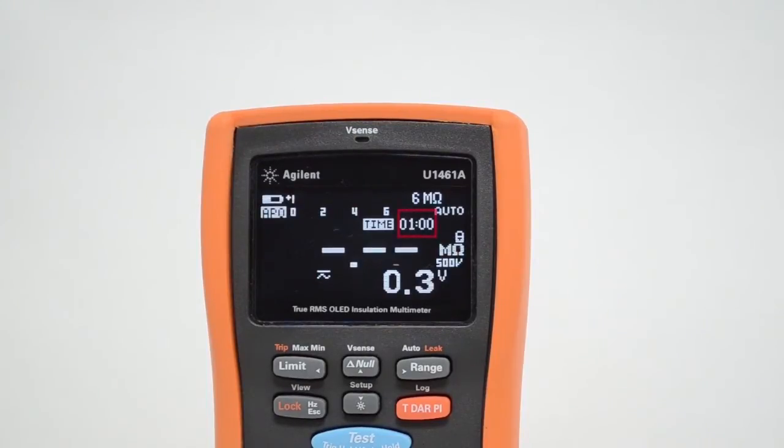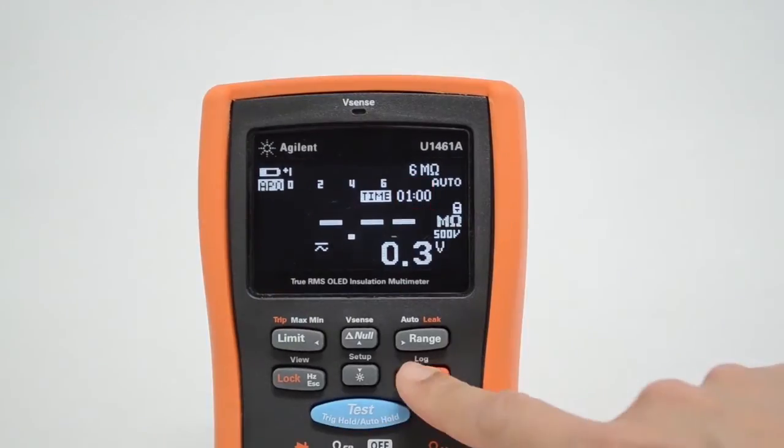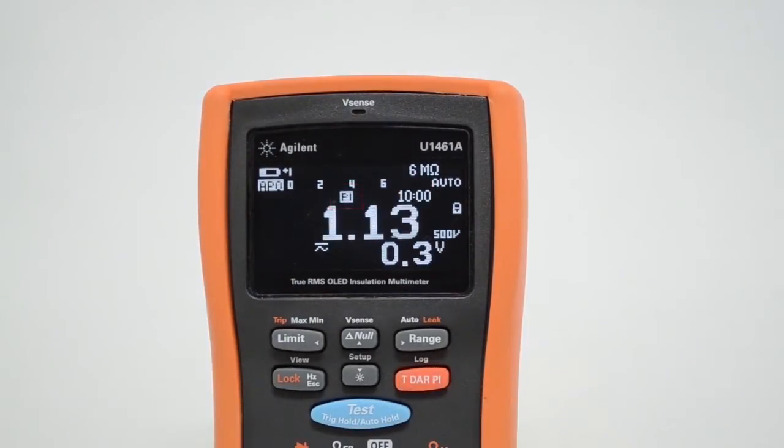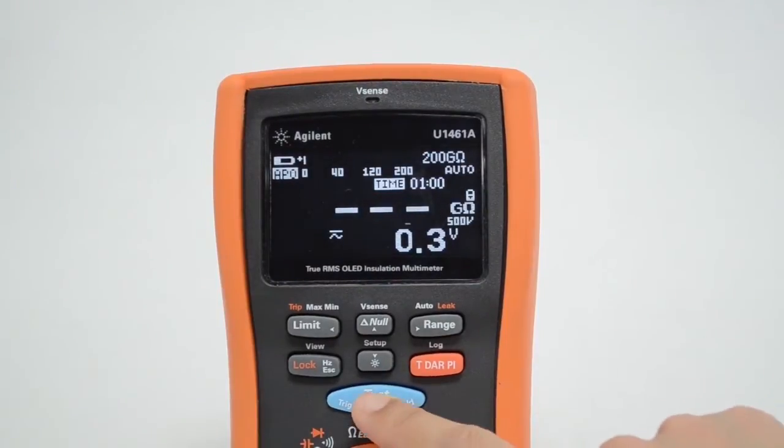Next I will do the PI test for the polarization index value. Let's turn on the test by pressing the blue test button.